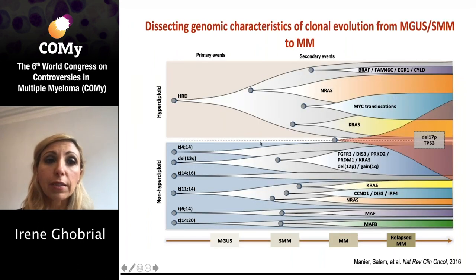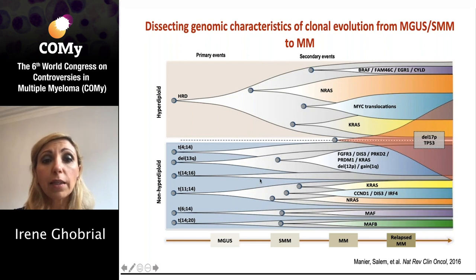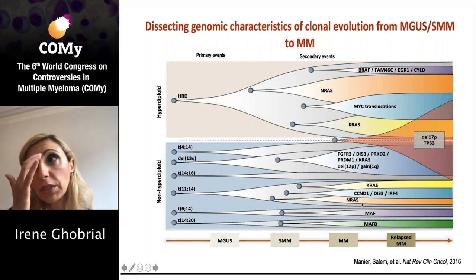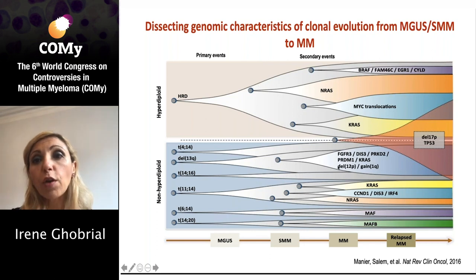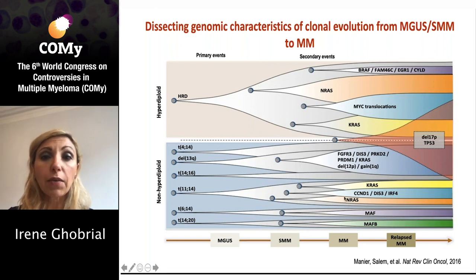In multiple myeloma we have primary genetic events — hyperdeployed and non-hyperdeployed — that may occur even at early stages like MGUS. These progress into the asymptomatic stages of smoldering myeloma, starting to acquire secondary events like M-RAS and K-RAS mutations. And then by the time we see patients with overt myeloma, you have at least five subclones with many having multiple genetic events including K-RAS, M-RAS, MYC translocations, and so on.